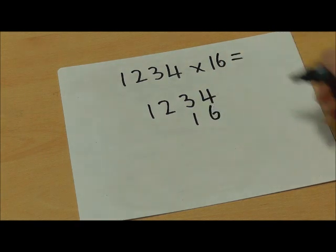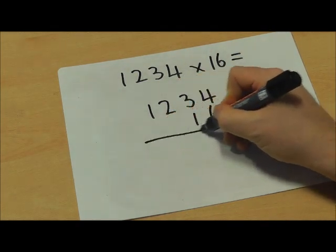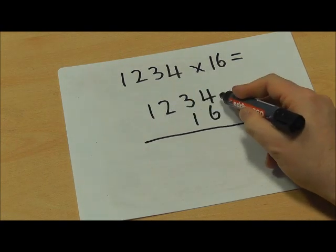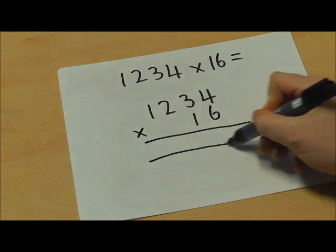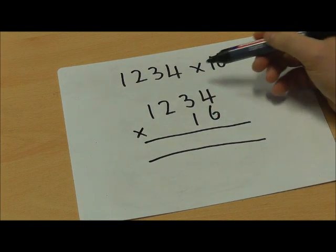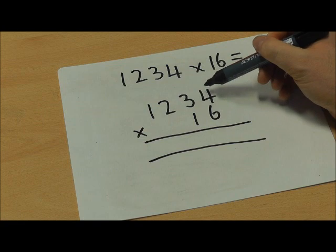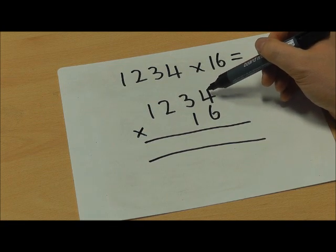So I can do the sum 1234 multiplied by 16. My first row is going to involve me multiplying this 6 by all of the top numbers, so I'm going to do 4 times 6, 3 times 6, 2 times 6, and 1 times 6.